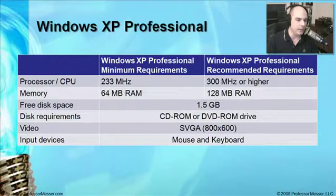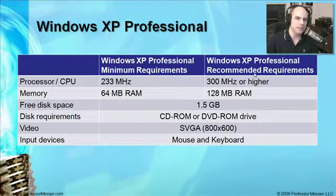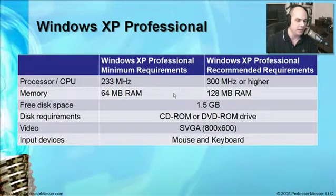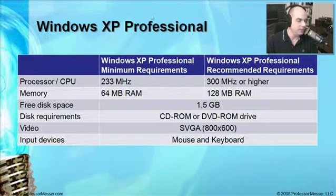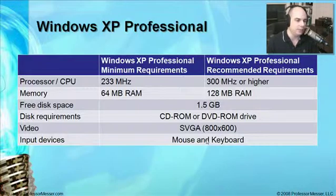There are a number of requirements for Windows XP Professional we need to think about — specifically the minimum hardware needed just to run the operating system. We need at least a 233 megahertz machine with 64 megabytes of RAM, one and a half gigabytes of hard drive space, and at least a CD-ROM or DVD-ROM drive. Windows XP does not come on floppy disks, so you cannot upgrade from floppy like you had the option to in Windows 2000. We also need a decent video card, and a mouse and keyboard will certainly come in handy.